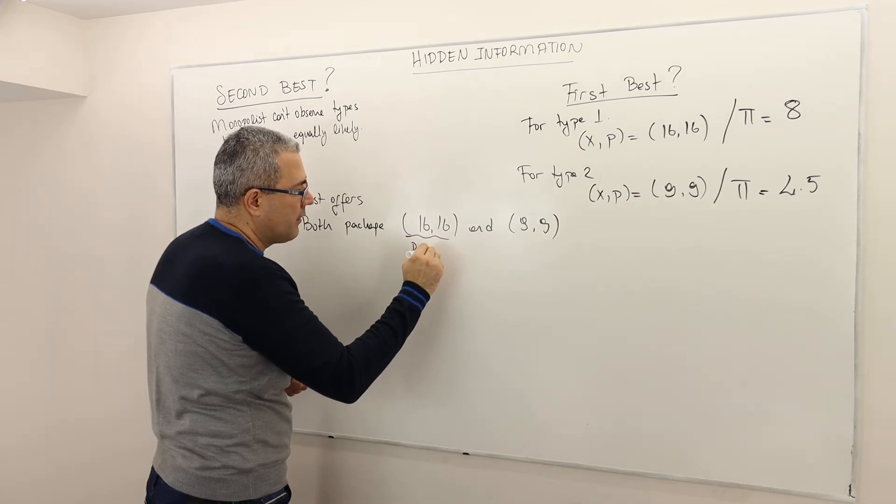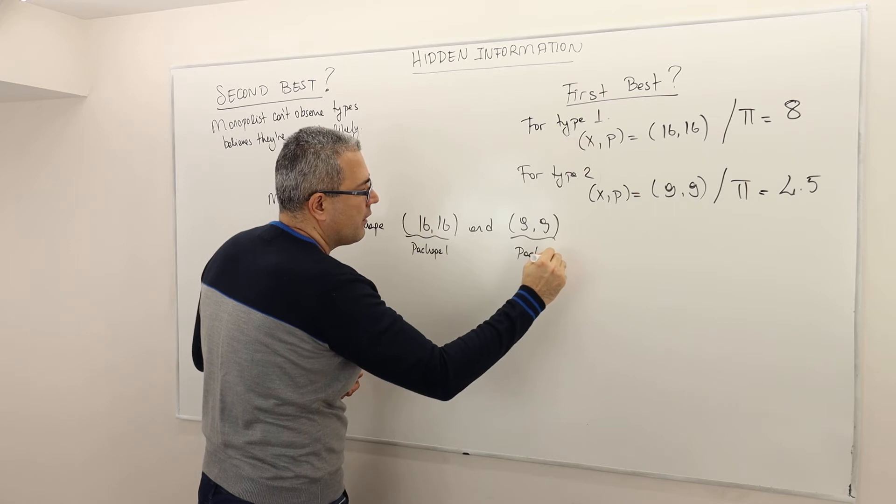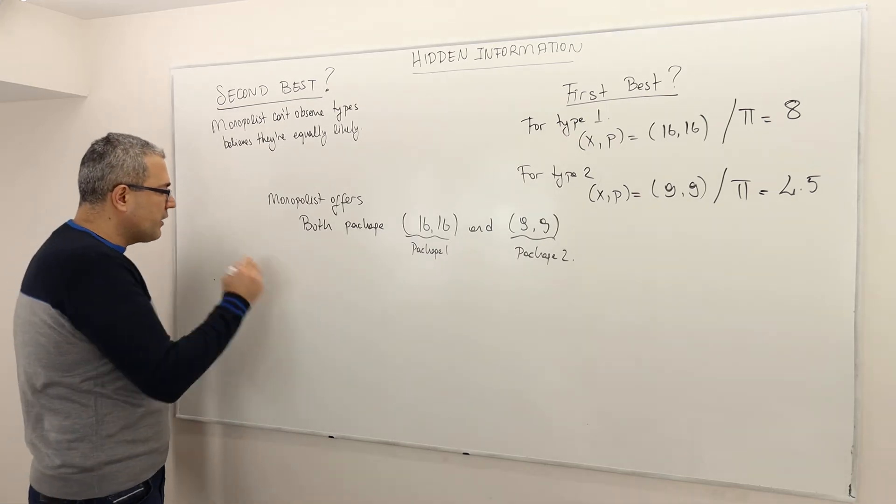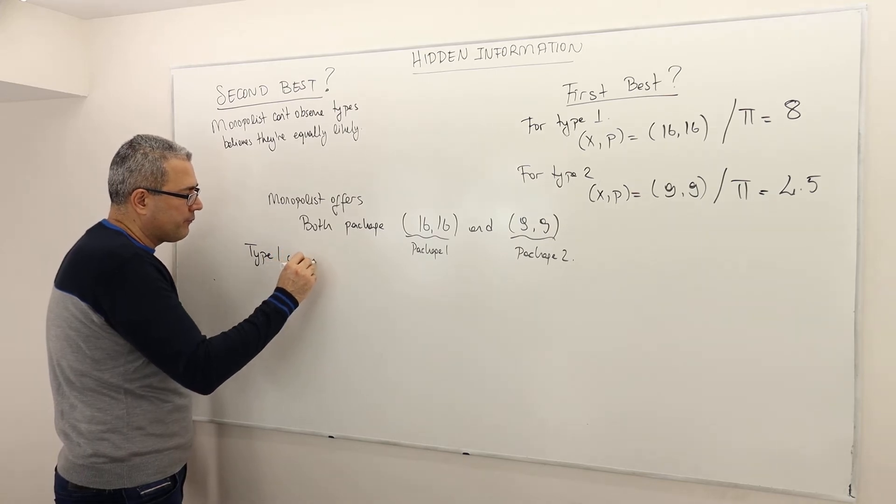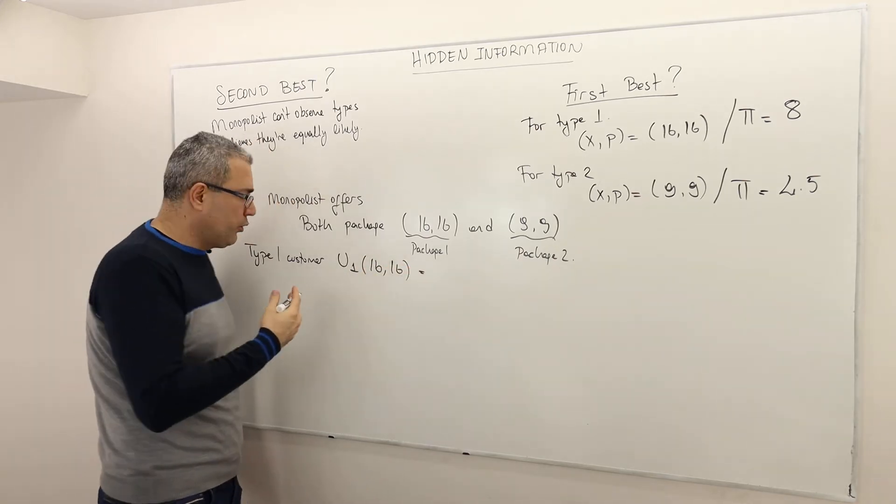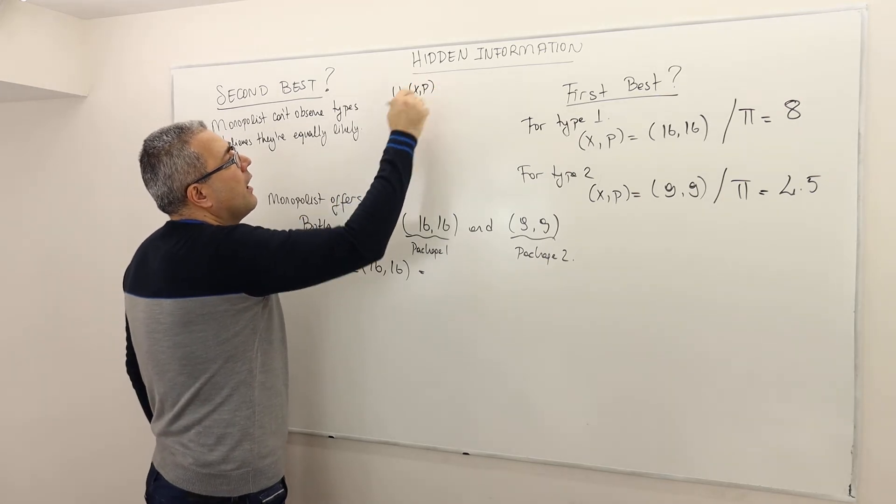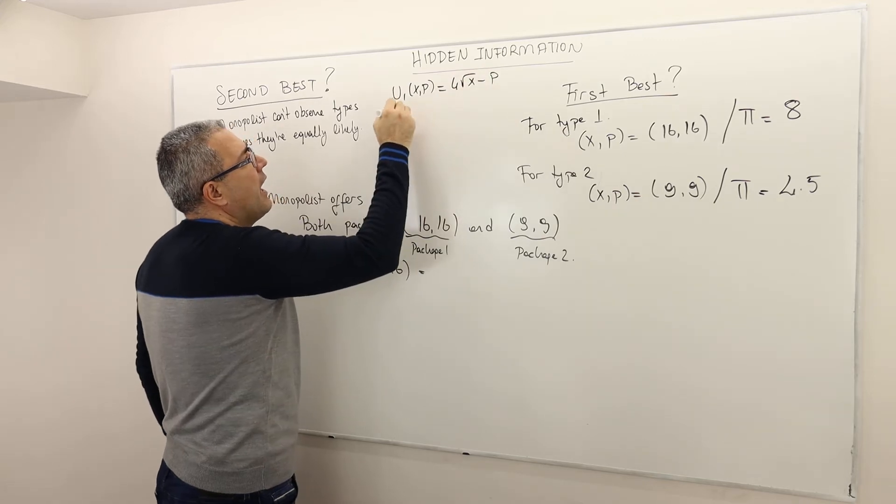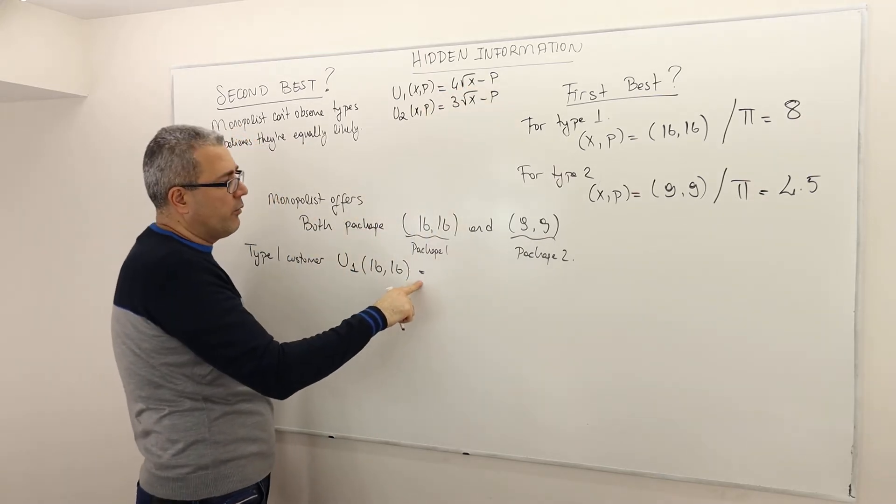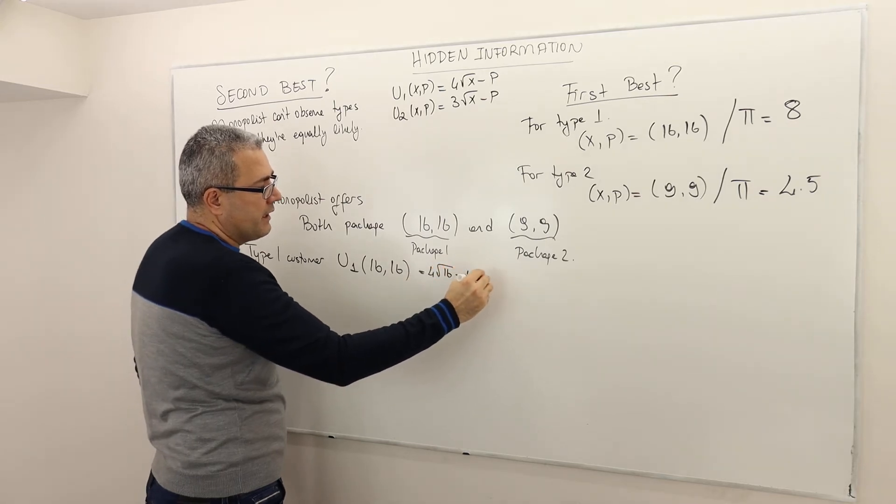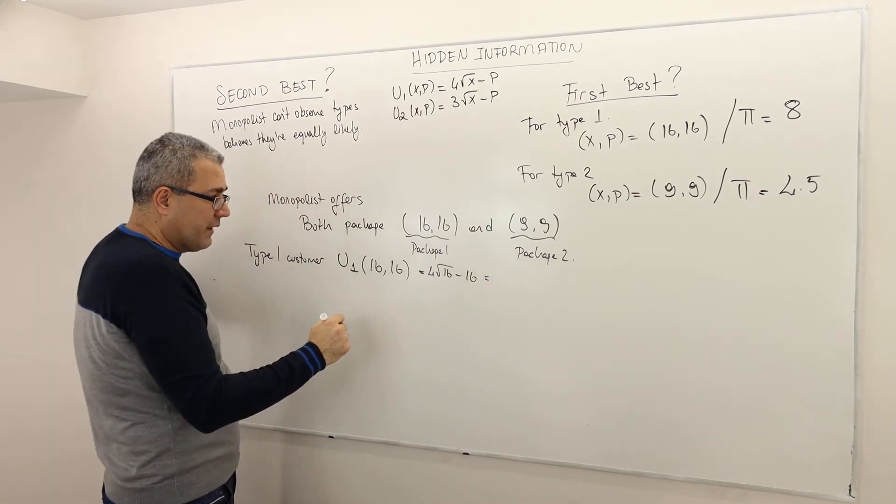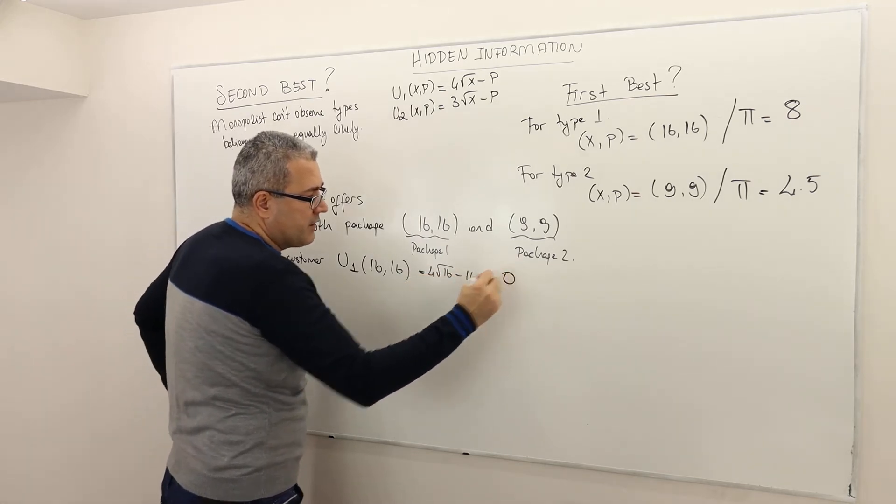So let's suppose monopolist offers both package 16,16 and 9,9. So I'm going to call this package one and I'm going to call this package two. So who is going to buy what package? If I am type one customer, what is going to be my utility? If I buy 16 pack at a price 16, remember my utility was utility of type one was 4√X - P. So my utility is going to be 4√16 - 16, which is 16 - 16, so zero utility.